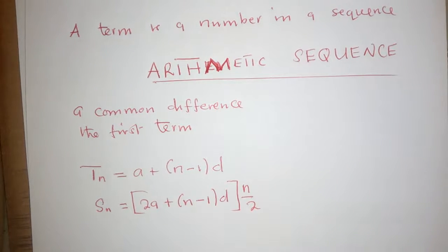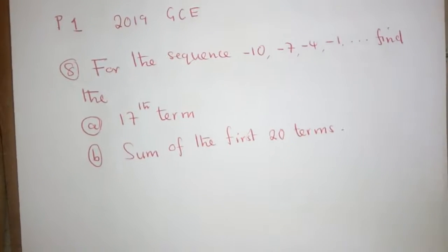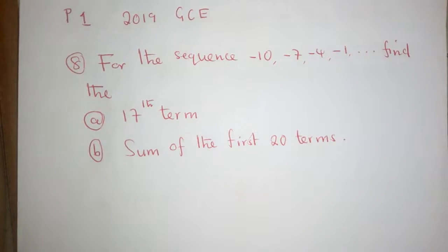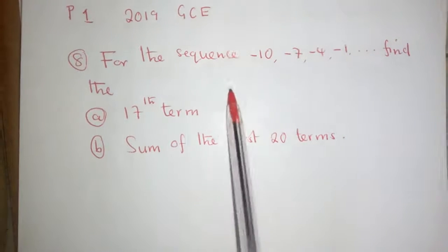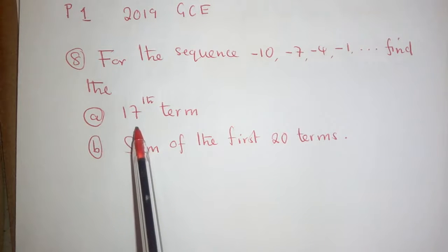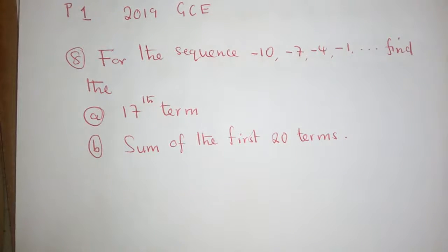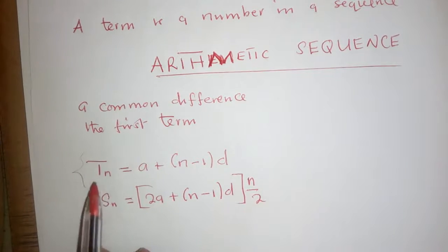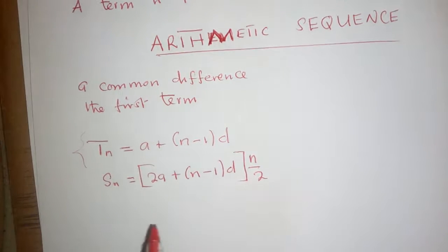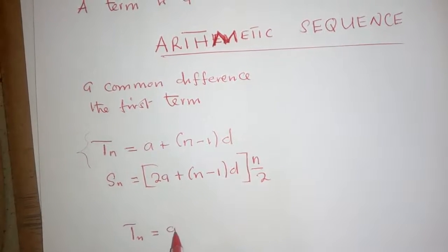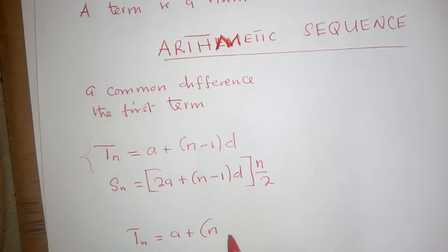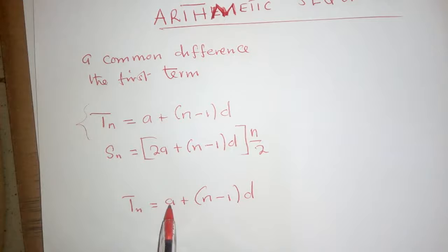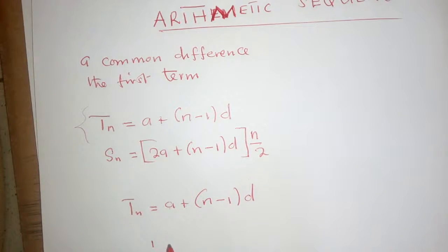Let's start with Example 1, which is an exam question from 2019. In this question, they have given us a sequence and asked us to find the 17th term. The formula for finding a term is: T sub n equals a plus open bracket n minus 1 close bracket times d.